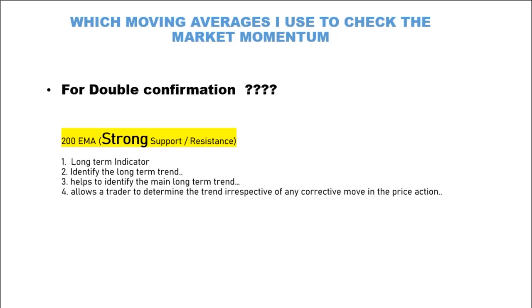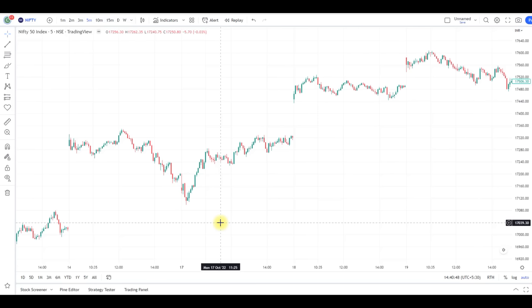Now I am going to tell you about the 200 EMA, which gives us double confirmation to enter into a trade. The 200 EMA is a long-term indicator that helps the trader identify the long-term trend. So we have seen 5 EMA, 20 EMA, and 200 EMA and how we can use these in intraday trading.